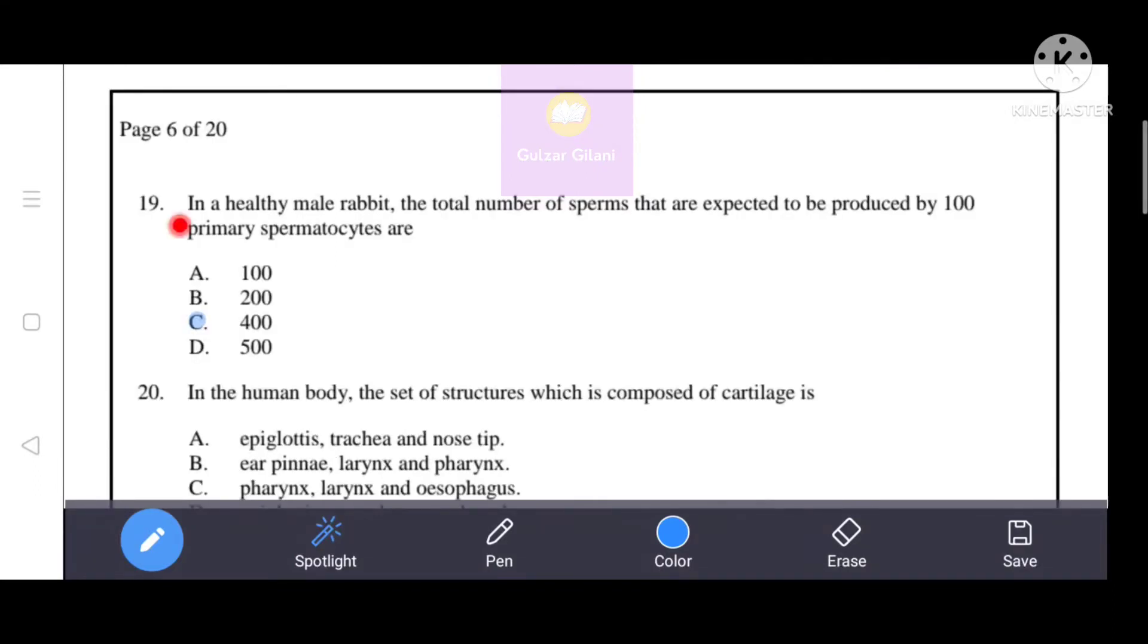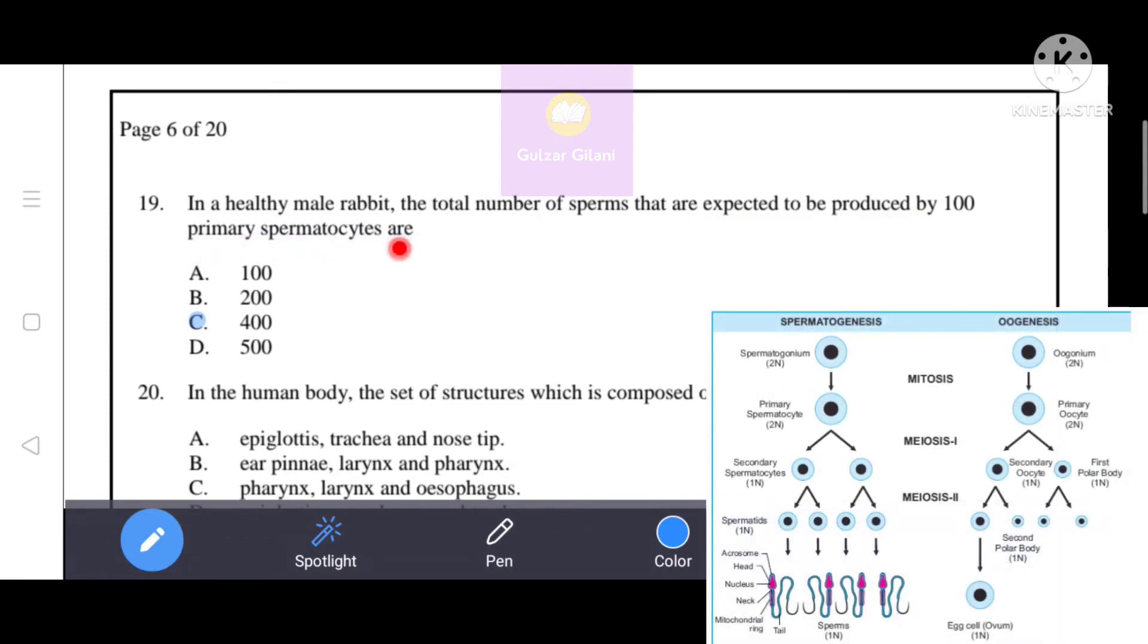Next question. In a healthy male rabbit, the total number of sperms that are expected to be produced by 100 primary spermatocytes are - each primary spermatocyte produces 4 sperms. That's why the correct answer is option C, that is 400. 100 multiplied by 4 equals 400, means option C is the correct answer.